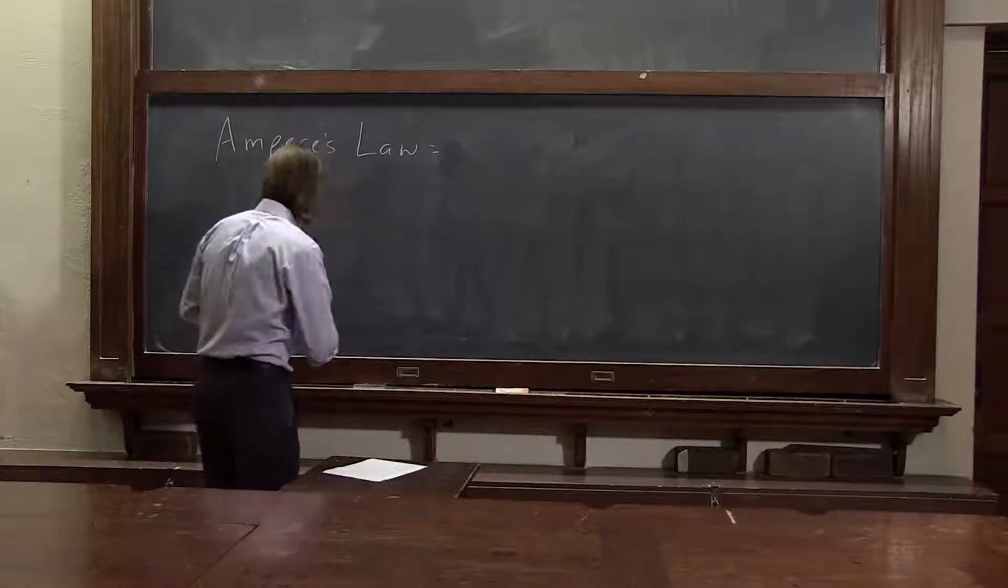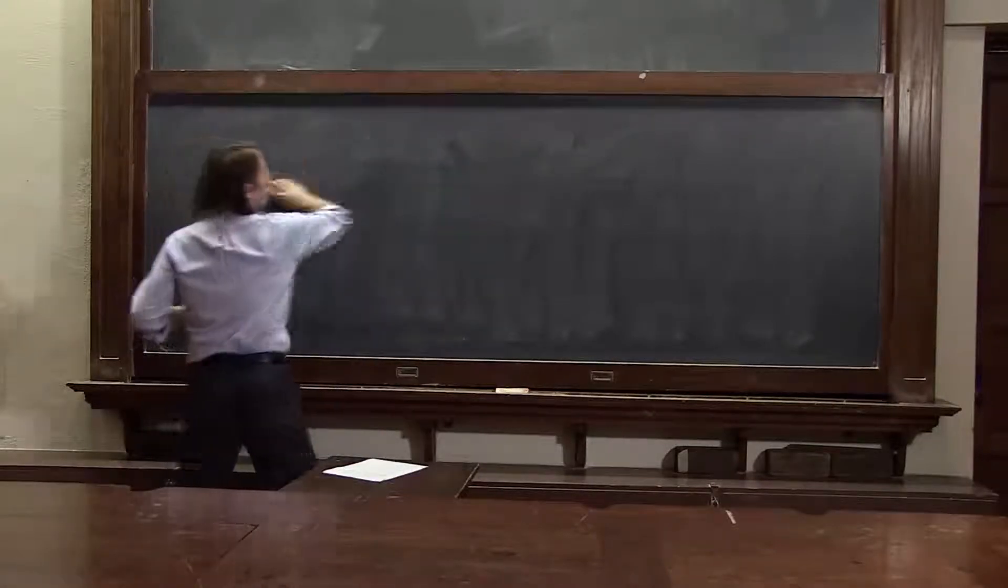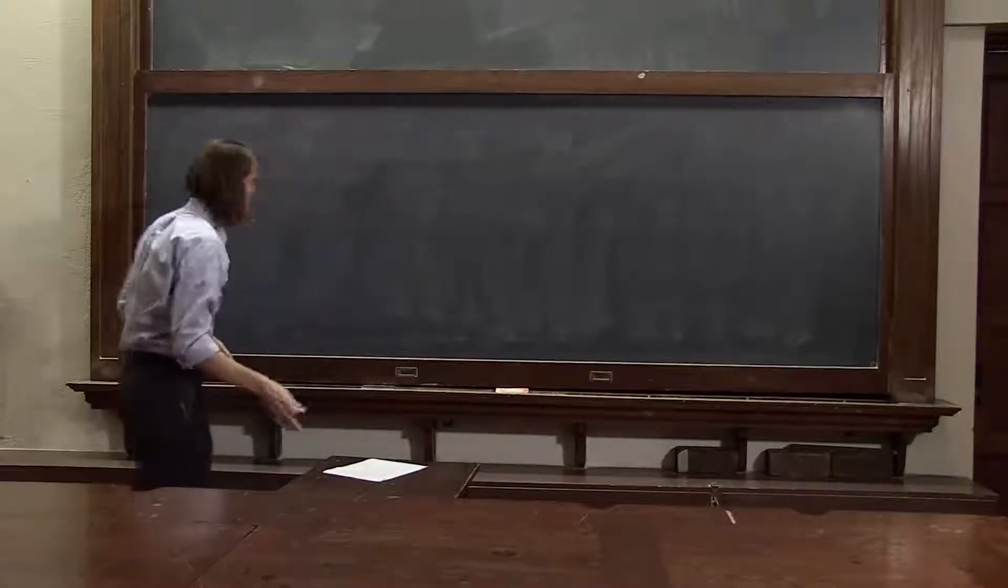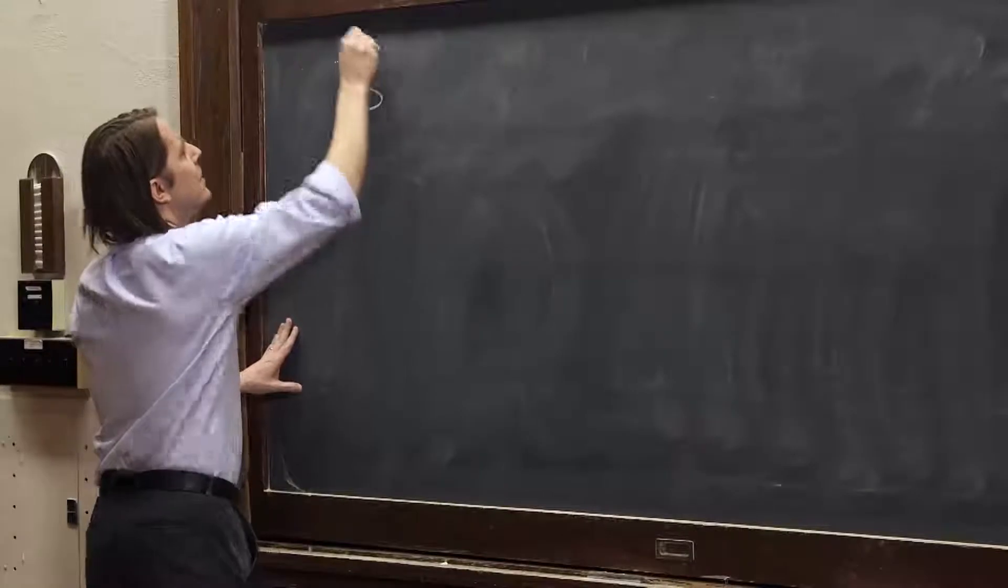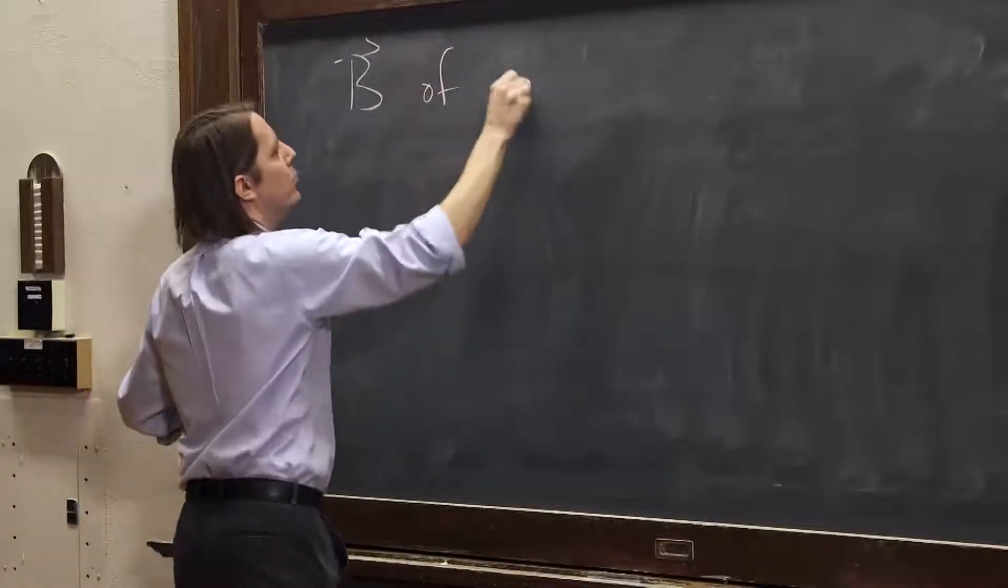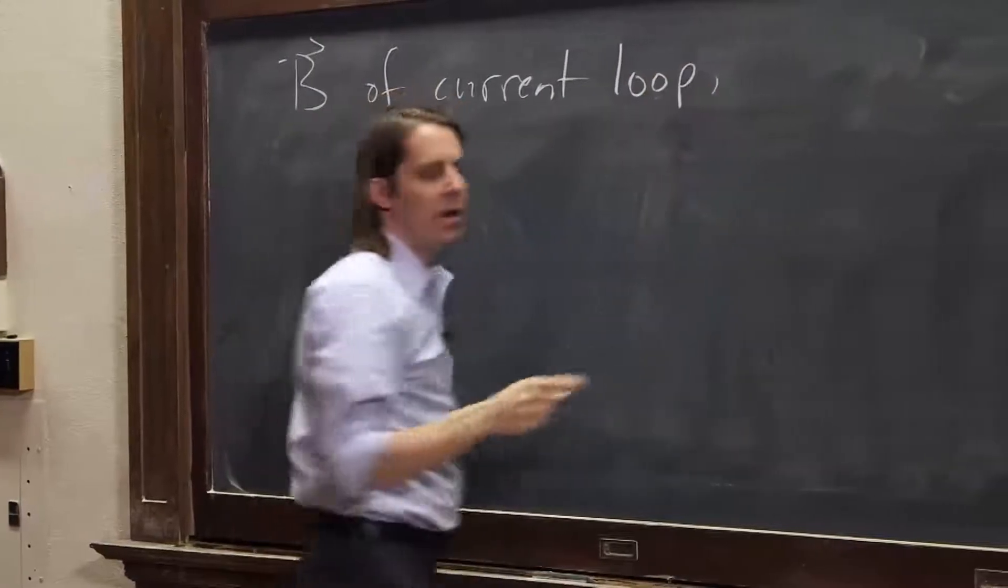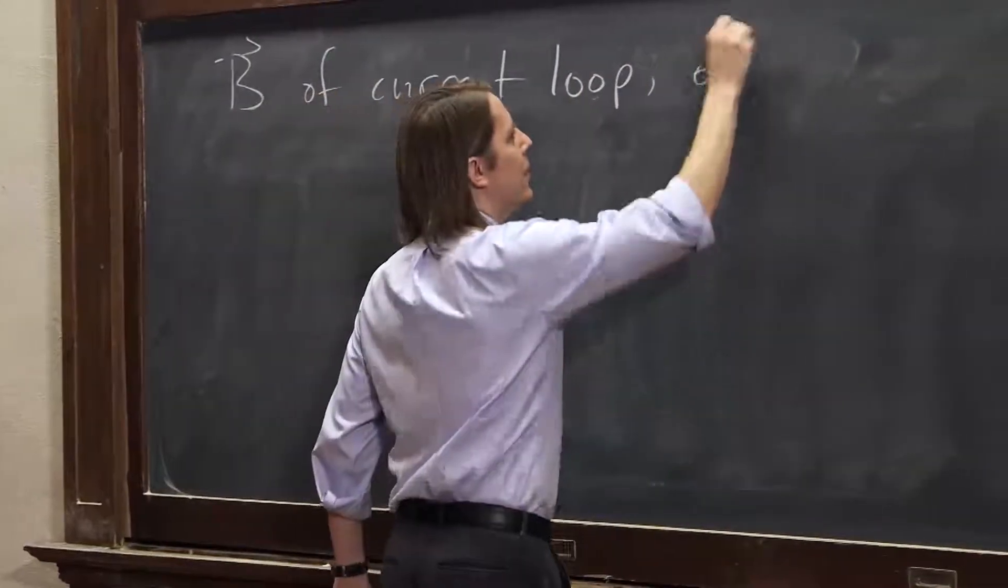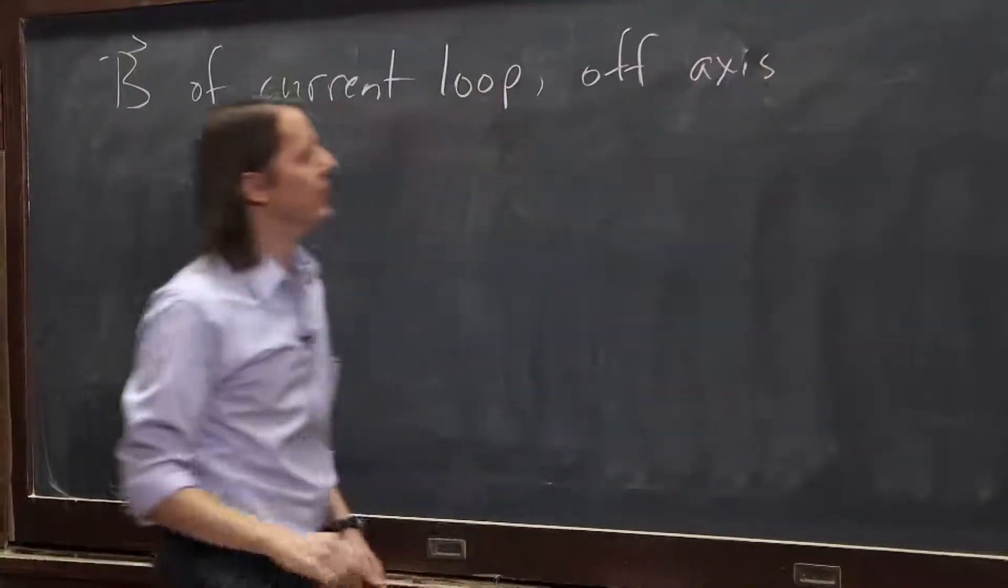He says we did the B field at the center of a loop, let's do it off axis. So okay, it's not easy, but for Mr. Cruise, fine. We will do it off axis. It's the same... well yeah, we can do it because it's a symmetry problem really.